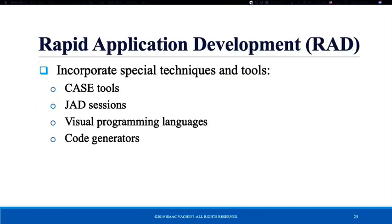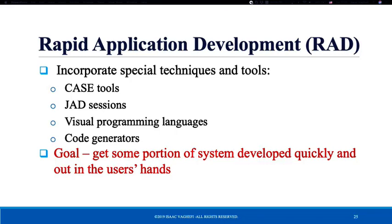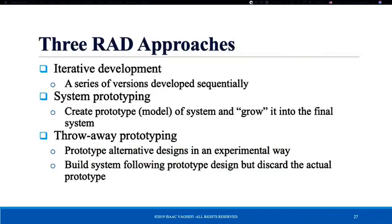Rapid Application Development (RAD) techniques are specifically designed to cover some of the weaknesses of waterfall methods and speed up the analysis, design, and implementation phases. RAD uses things such as CASE tools, JAD sessions, visual programming languages like Visual Basic, and code generators, which all speed up development. There are three variations to RAD: iterative development, system prototyping, and throwaway prototyping.